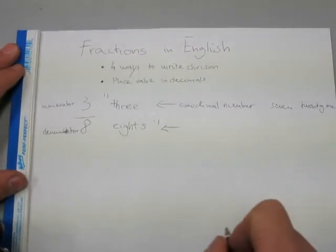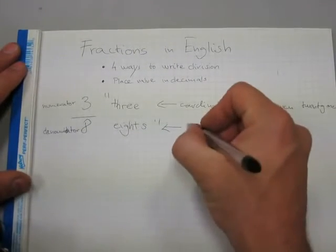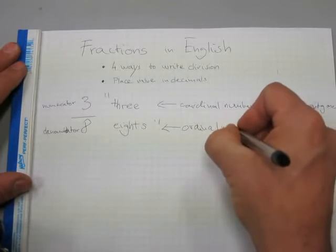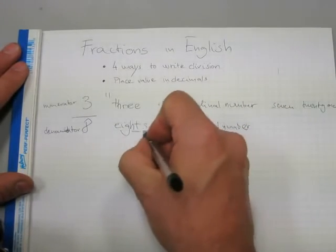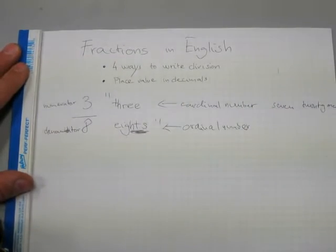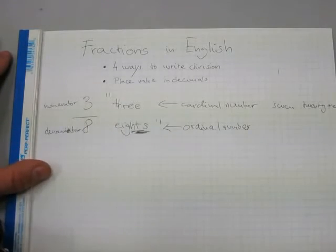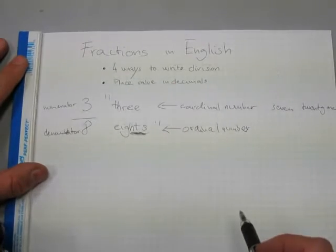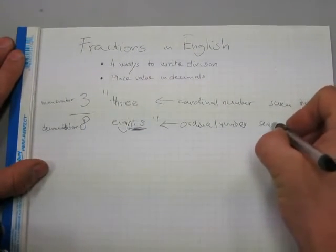For the denominator, we say eighths. And these eighths is an ordinal number. And it's in a plural form and it's got a TH in it. Ordinal.